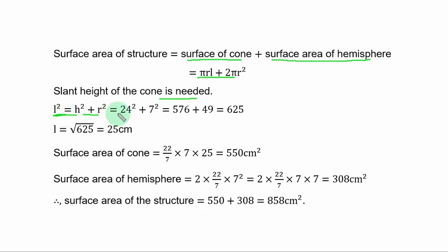The height is 24. You square it plus radius is 7. You square it and you have 576 plus 49. That is 625.